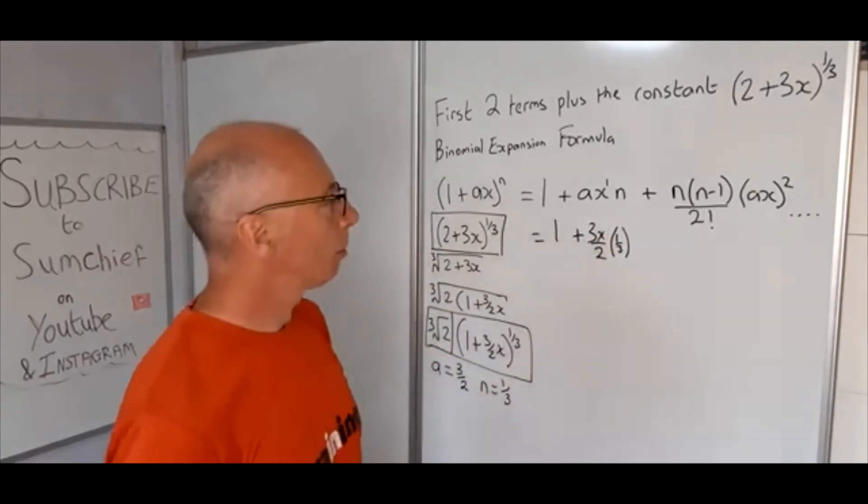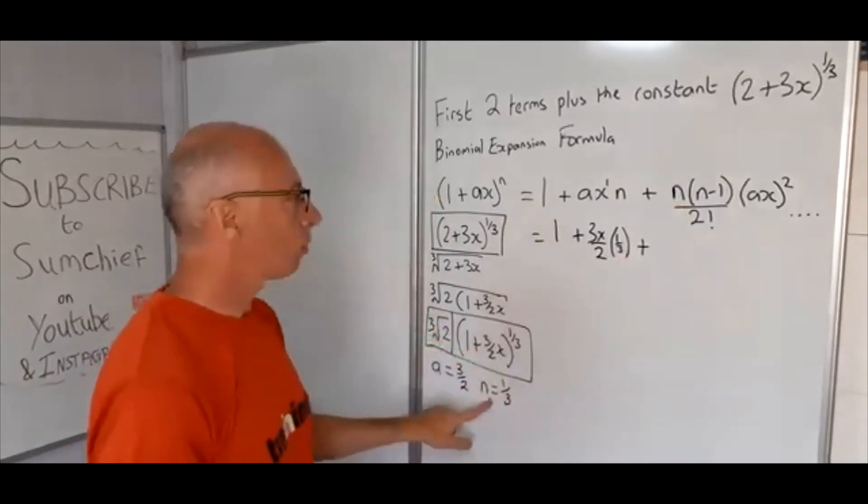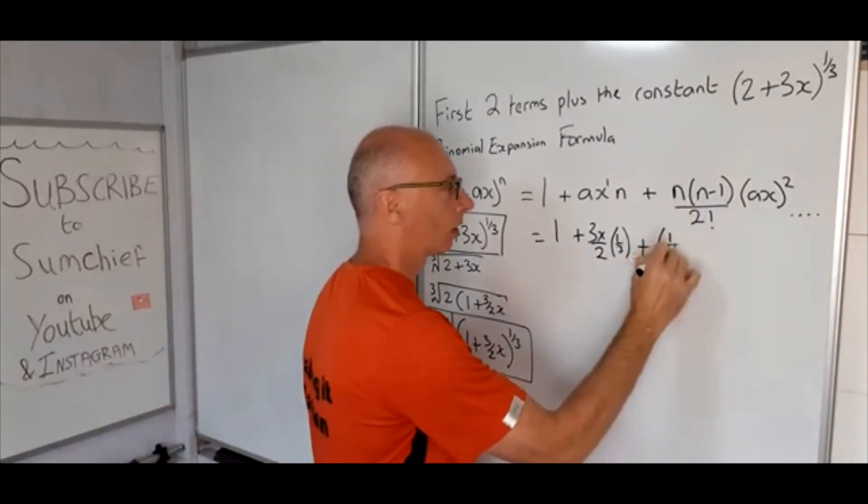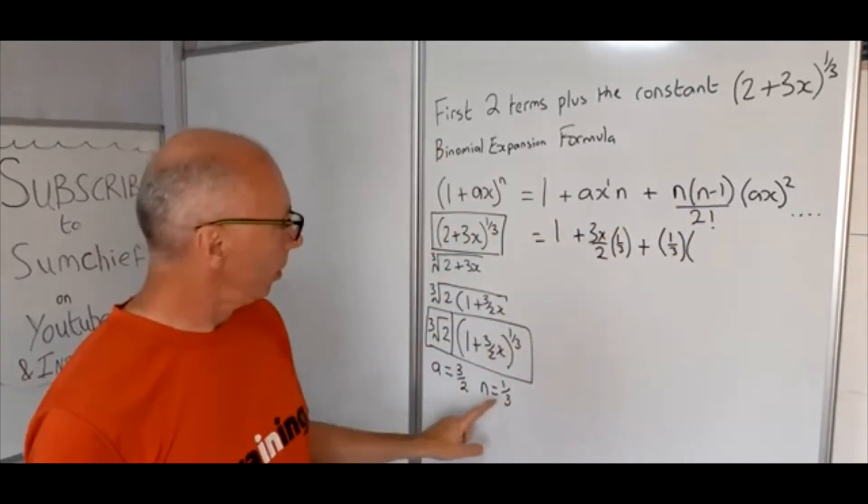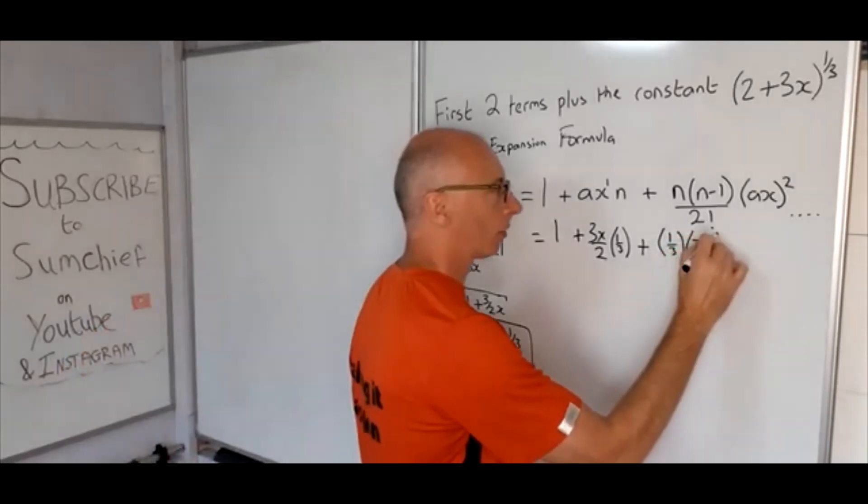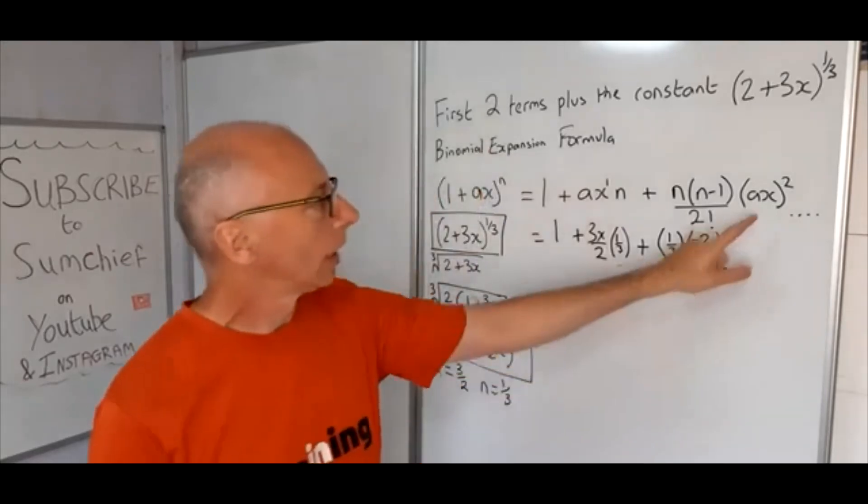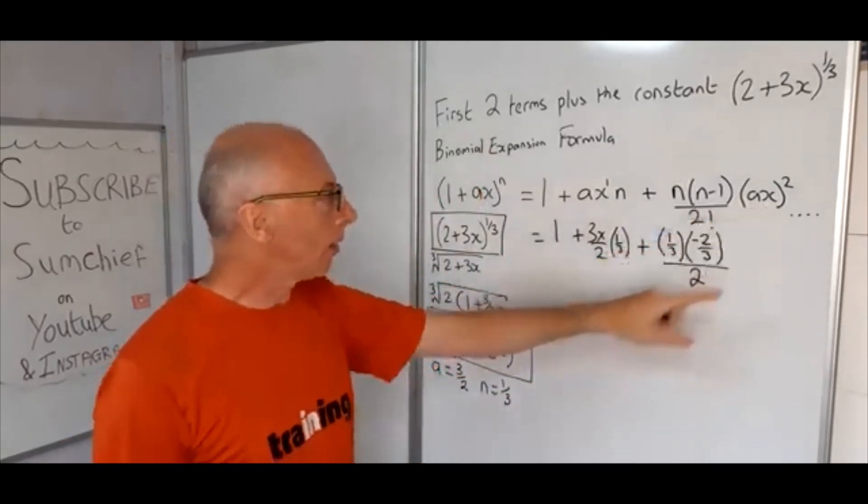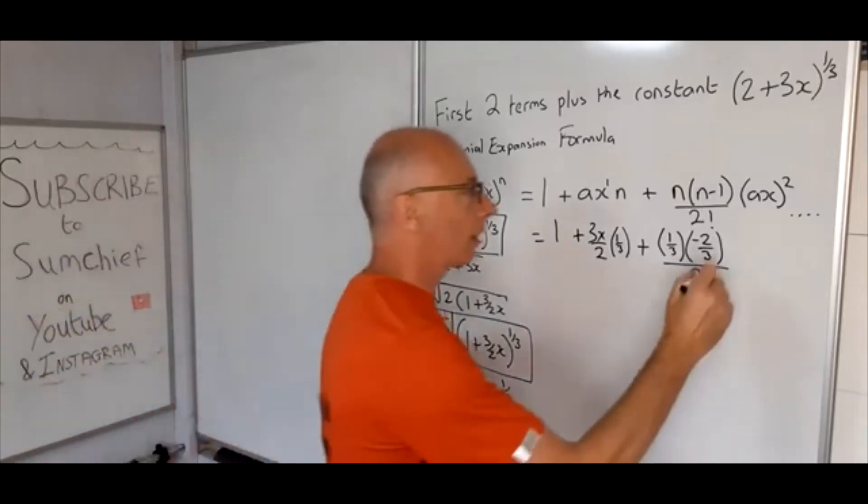That's pretty straightforward. Now we've got n, that's 1/3, n minus 1, so 1/3 minus 1 is -2/3, 2 factorial is 2. Just be a little bit careful here, now (ax)^2, so (3x/2)^2.